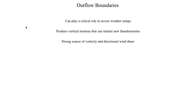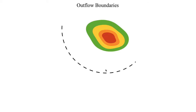Another thing about outflow boundaries is they are a strong source of vorticity and directional wind shear, not by the same mechanism as a dry line bulge. The outflow boundary is driven by a mechanism called baroclinic vorticity — the tendency for air to spin due to a contrast in density. If you've got two air masses with very different densities, you have strong baroclinic vorticity — meaning at the interface of those two air masses you have strong rotation occurring. Right at the leading edge of the outflow boundary, that's where you typically have the strongest baroclinic vorticity, right at the interface between warm and cold air.